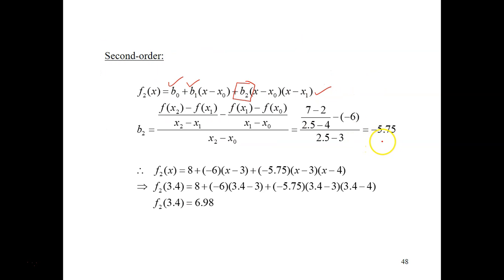You will get the answer for B2 as negative 5.75. And substituting all those B0, B1, and B2 into this second order polynomial, you get 8 plus negative 6. This is B0, this is B1, and this is B2. The x is 3.4. Substitute everything, you will get your second order interpolating polynomial as 6.98.